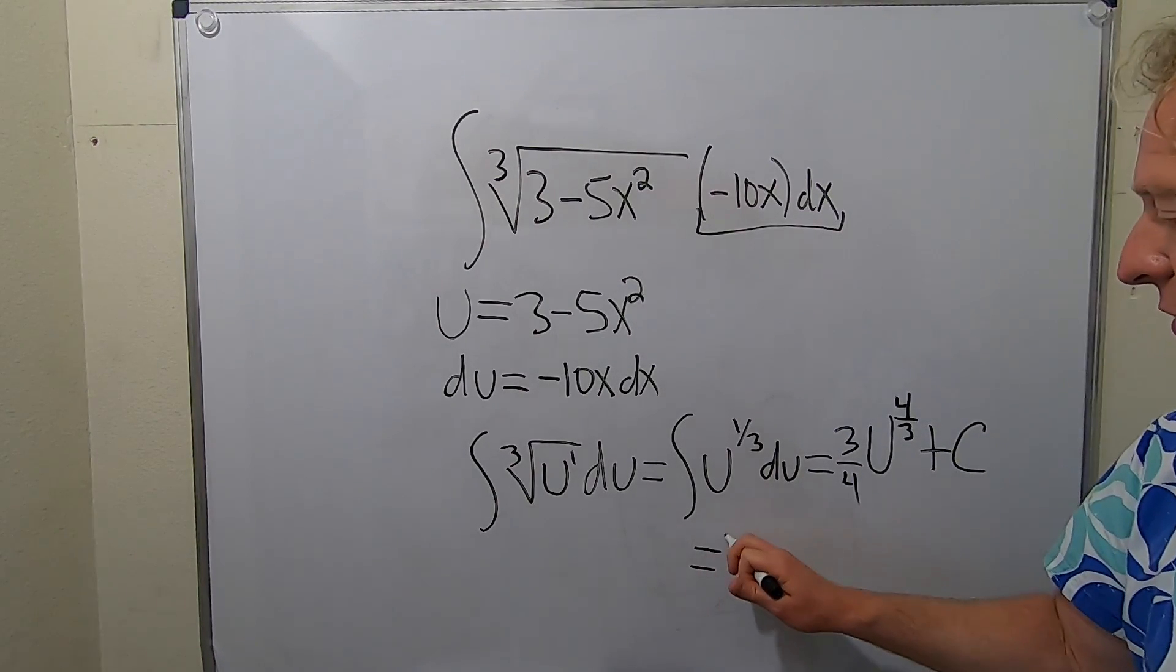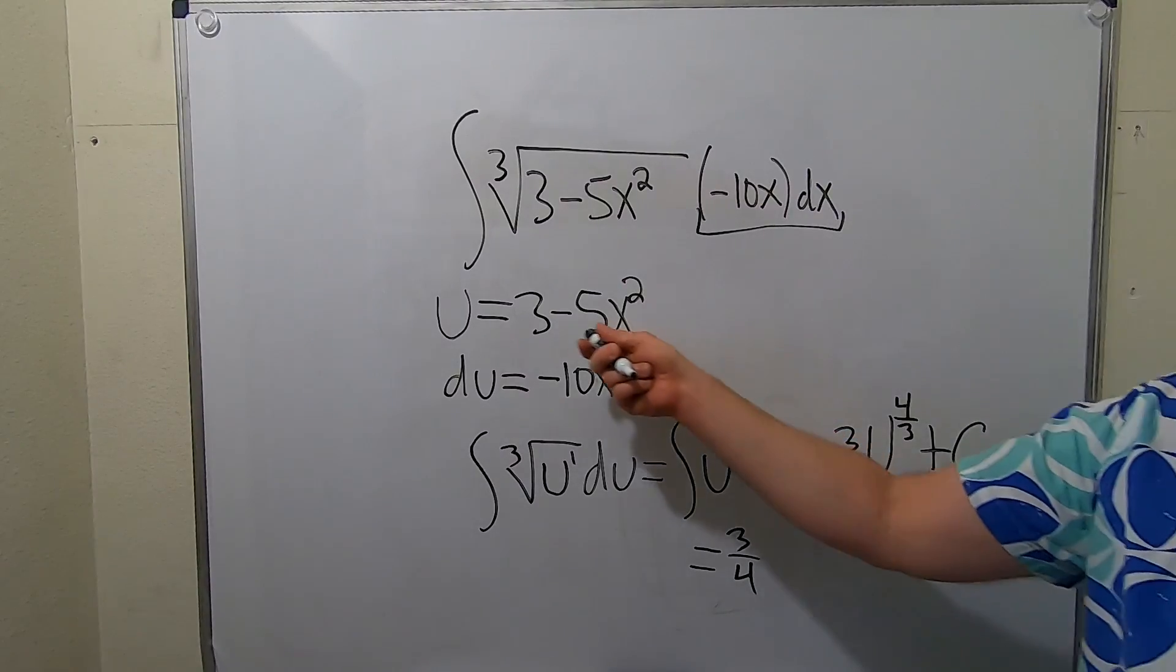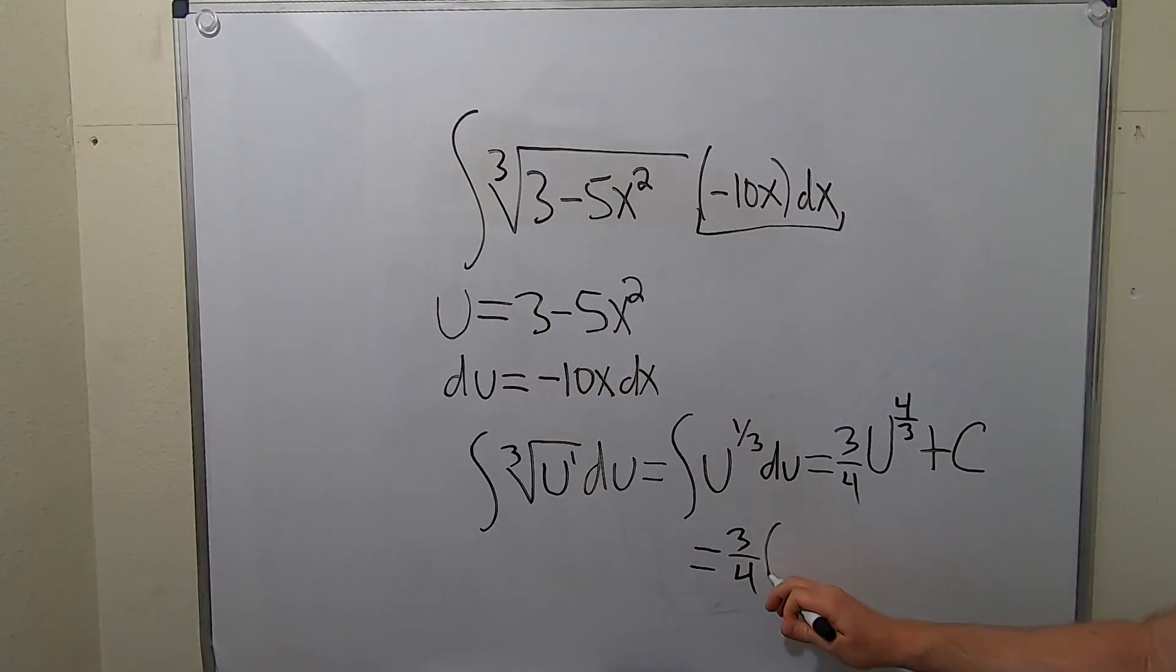So this is equal to 3 fourths. Our u is equal to this. So you simply replace it. 3 minus 5x squared. And this is all to the 4 thirds. So 4 over 3. And don't forget the constant of integration plus c.